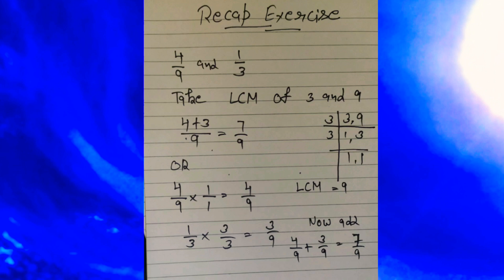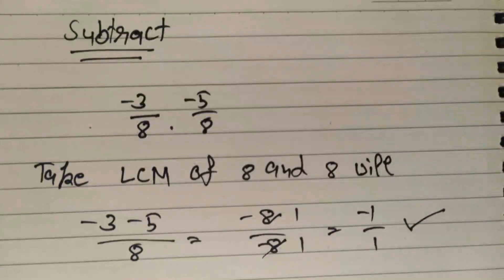Alternatively, you can make the denominators equal by multiplying each fraction by the appropriate number. For 4/9, no multiplication is needed — multiply by 1. For 1/3, multiply by 3/3 to get 3/9. Now add both fractions: 4/9 + 3/9 = 7/9.